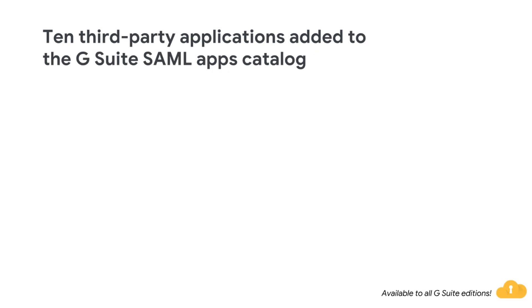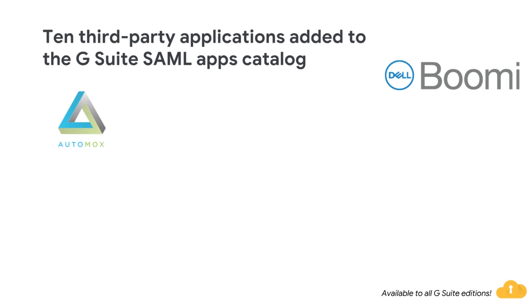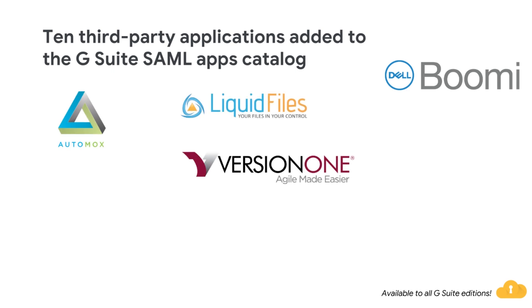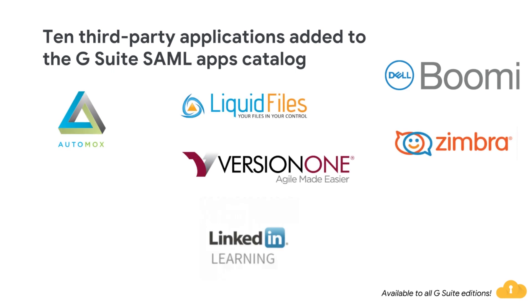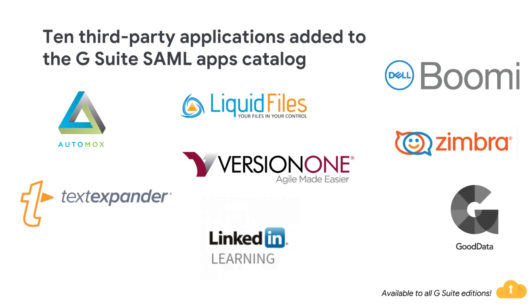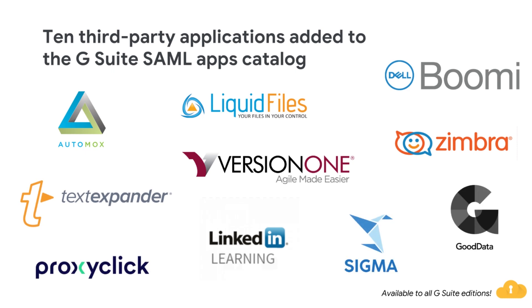With single sign-on, or SSO, users can access all of their enterprise cloud applications after signing in just one time. With more than 800 applications with pre-integrated SSO support in our third-party apps catalog already, we're adding an additional 10 applications, including Good Data, Liquid Files, and Version 1, just to name a few. You can find a full list of our pre-integrated applications, as well as instructions for installing them, in the help center.